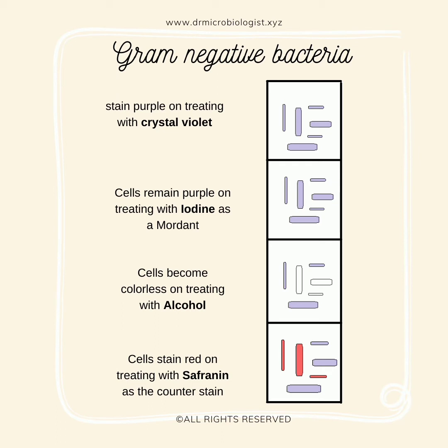And finally, in the fourth step, we treat them with safranin, which is the counter stain and stains the cells red. In the diagram, not all of the cells stain red or decolorize because of the efficiency of the process.